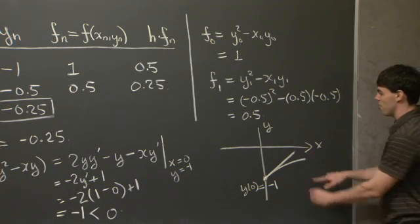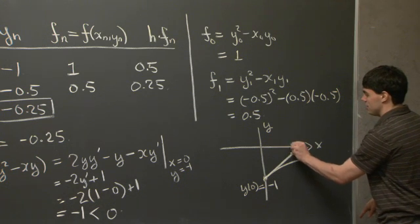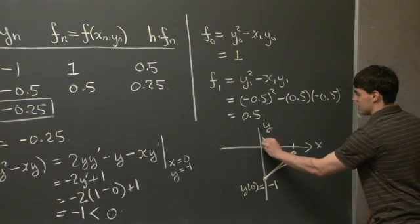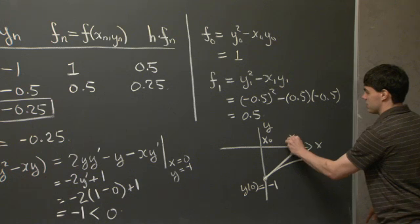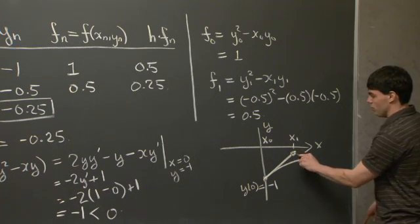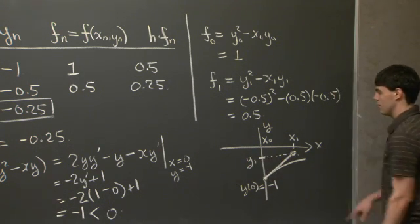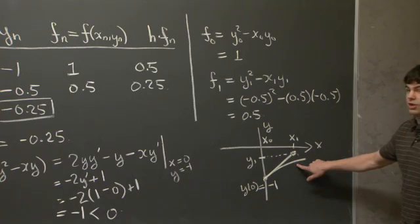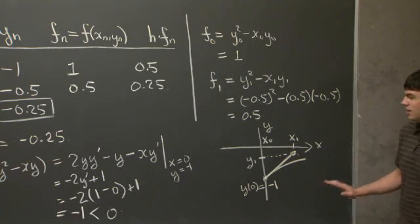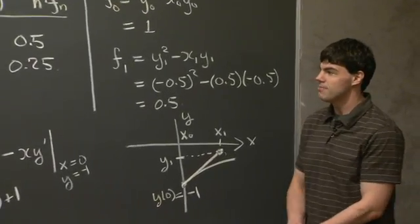So we can see that our approximate solution, when we take one step to go from here to here, so this is x_0, this is x_1, our solution, which is now going to be y_1 here, is going to overestimate the curve. And the reason it overestimates, I'll just reiterate again, is because our solution is concave down.